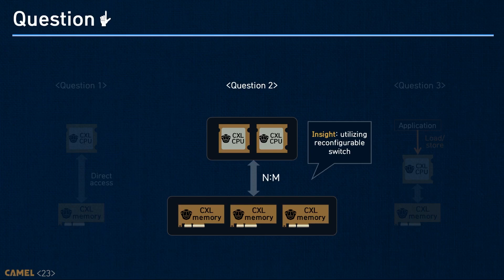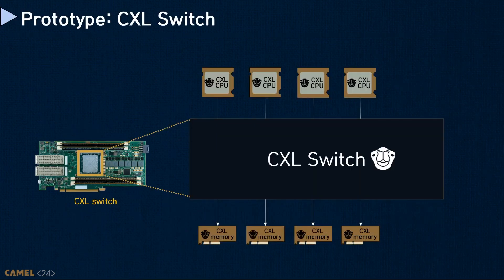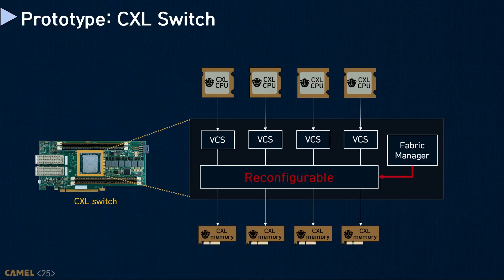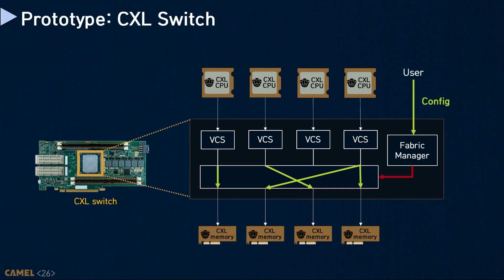To realize memory disaggregation, DirectCXL implements a reconfigurable switch supporting multiple CXL CPUs and CXL memory devices. Our CXL switch uses the same hardware platform as the CXL CPU and supports four CXL CPUs and four CXL memory devices. The switch includes a reconfigurable crossbar so connections among CXL CPUs and CXL memory devices can be changed. Users configure the crossbar through the Fabric Manager. After configuration, the crossbar connects CXL memory devices to CXL CPUs, and connections can be changed at runtime using hot plug and hot remove features.